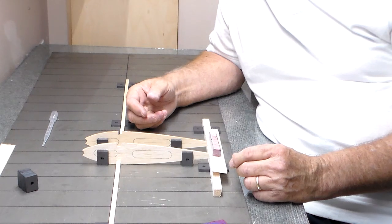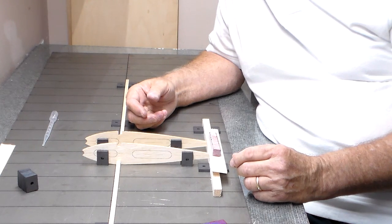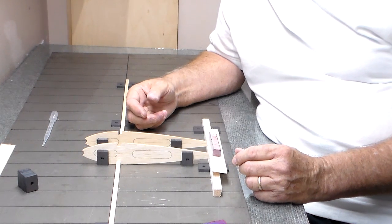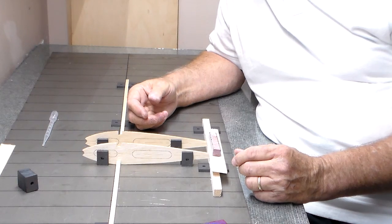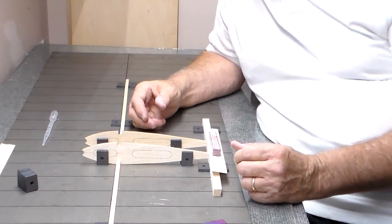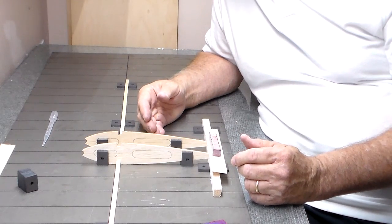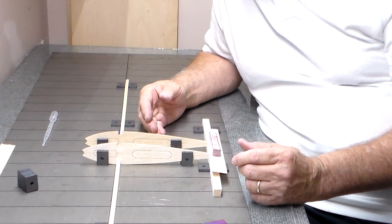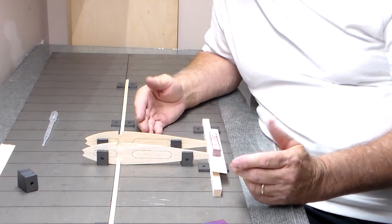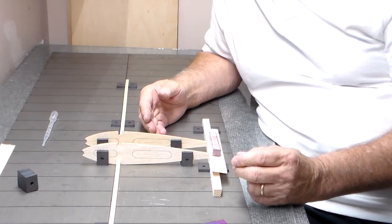Then you sheet the center and the end bays or wherever it calls for sheeting. The Banshee did not call for leading edge sheeting, so it's just center sheeting. So anyway, short tutorial on how to use your magnetic building board to build a wing. I'll do one on the fuselage once I get some fixtures cut for that.